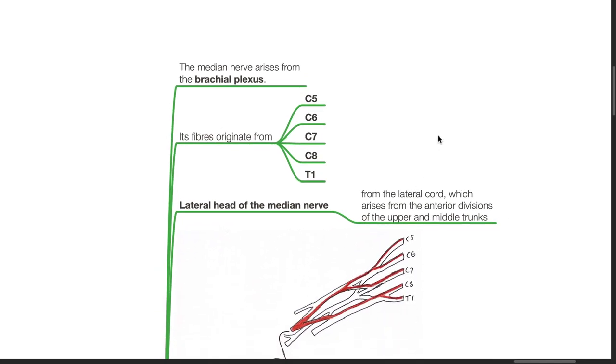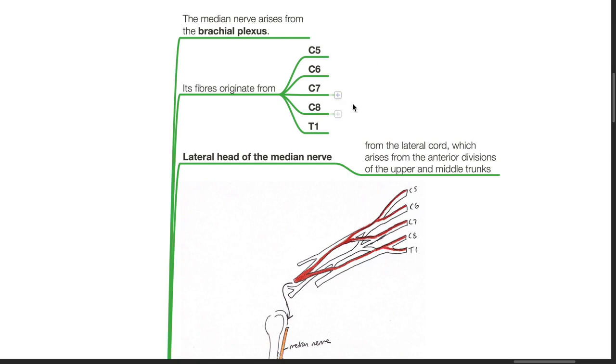Its fibers originate from C5, C6, C7, C8 and T1.